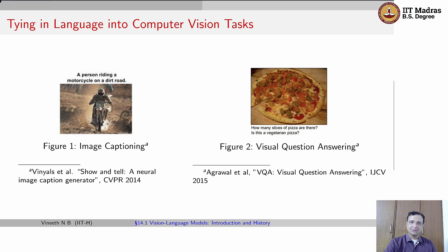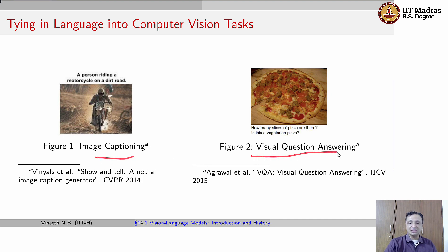There have been efforts on tying language into computer vision tasks, even among the topics visited in earlier lectures. We saw image captioning, where one takes an image and provides a text caption. We also saw visual question answering, where given an image, a question is asked — such as 'how many slices of pizza are there?' or 'is this a vegetarian pizza?' — and the model answers that question. These have been around for a few years now.